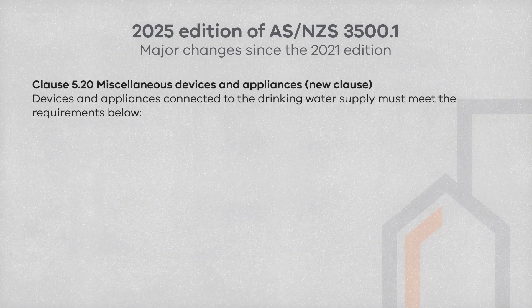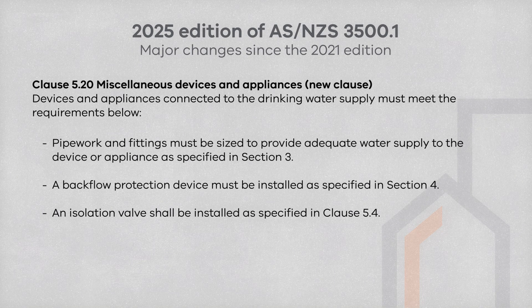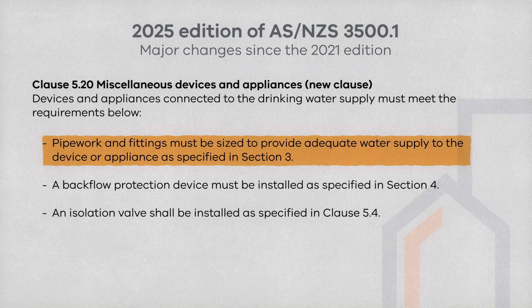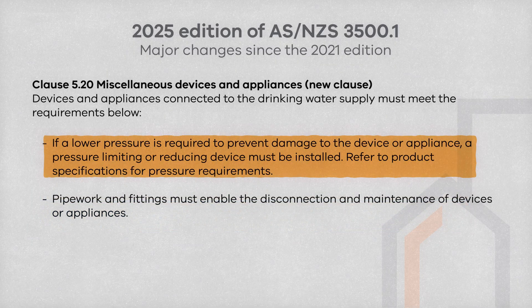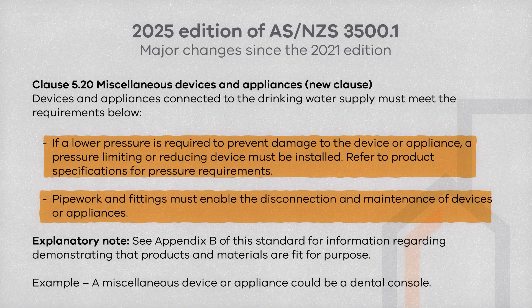A new Clause 5.20 covers the requirements where miscellaneous devices and appliances are connected to drinking water supply. Pipework and fittings must be sized to provide adequate water supply, appropriate backflow prevention devices, isolation valves, and pressure limiting requirements where required. The installation must also allow for the disconnection and maintenance of those devices and appliances. An example of a miscellaneous device or appliance would be a dental console.